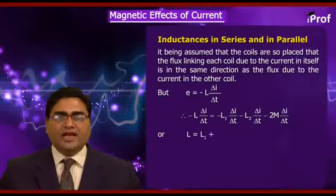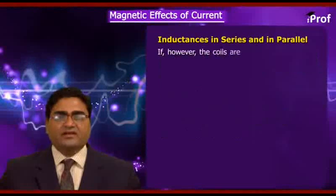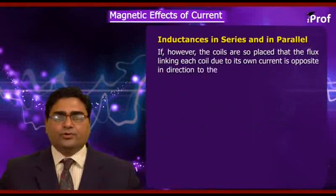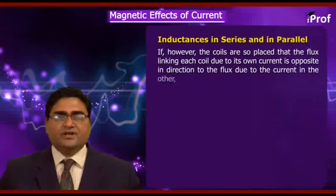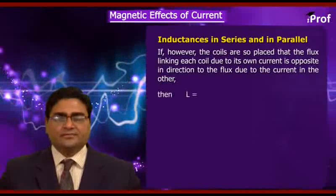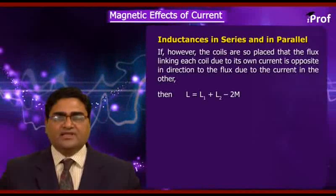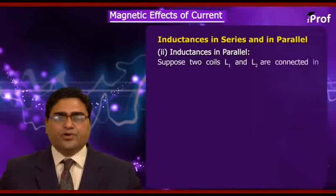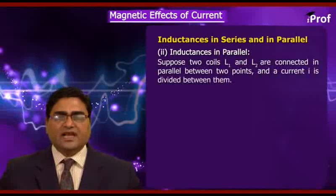Therefore L = L1 + L2 + 2M. If however the coils are so placed that the flux linking each coil due to its own current is opposite in direction to the flux due to the current in the other, then L = L1 + L2 − 2M.